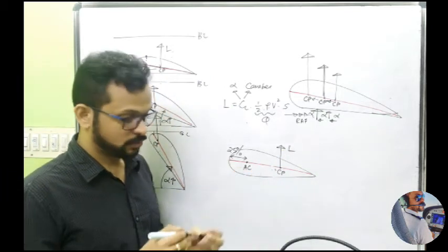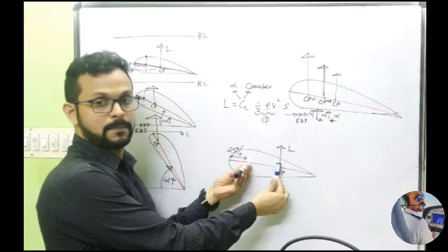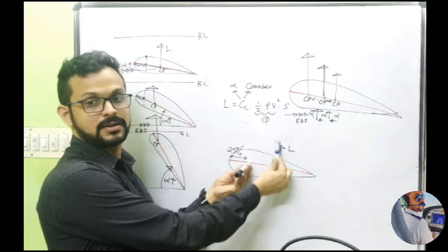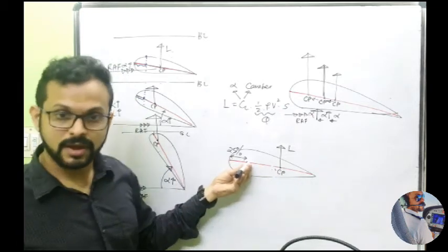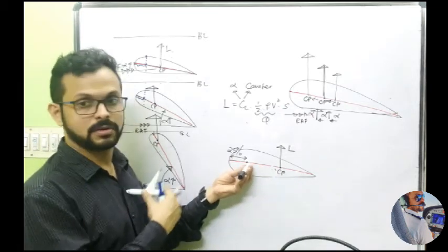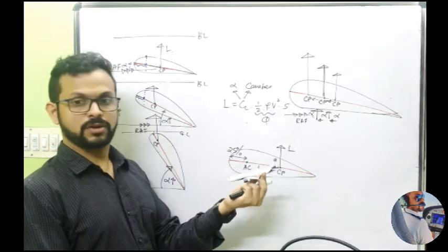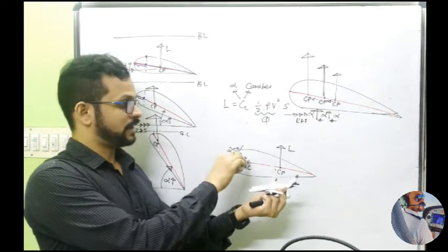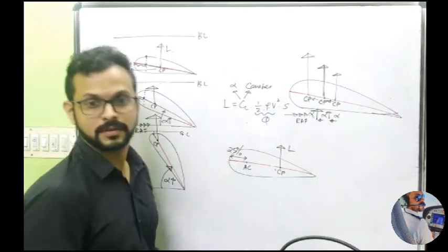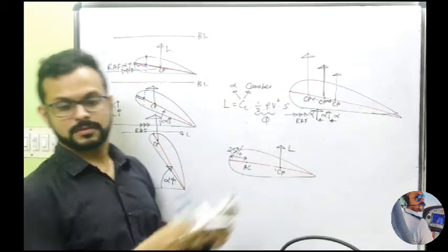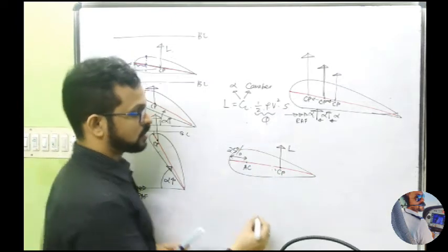You can see a torque being produced. We have the aerodynamic center toward the front of the wing, and the lift is produced behind it at CP. So what do you think is going to happen to the aerofoil? It's going to pitch down — because you have the aerodynamic center here and the lift produced here, the aerofoil is going to topple in the nose-down direction. That's what happens.